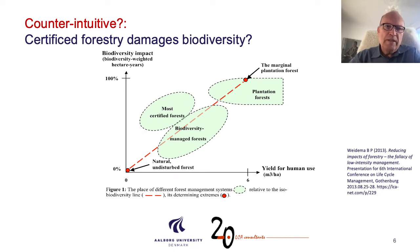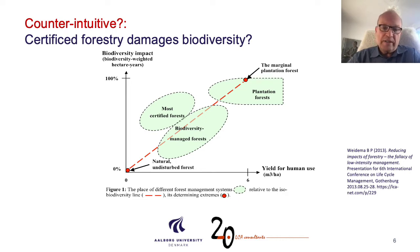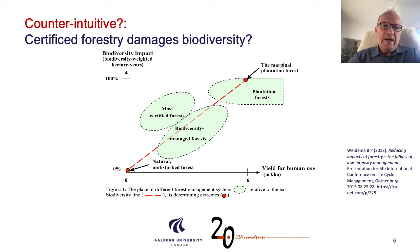If you look at a graph here, I can try to explain why we have a problem. The red dashed line runs from zero impact and zero yield up to the right-hand corner where we have a plantation forest. A plantation forest might have 100% of the biodiversity impact, but it also has a very high yield — at least six cubic meters per hectare. Some can go much higher than that. It means that to have more biodiversity per cubic meter, we would need to be below that red line. If we are above that line, we're actually having a higher biodiversity impact per cubic meter — not per hectare, but per cubic meter, and the cubic meter is what we are asking for.